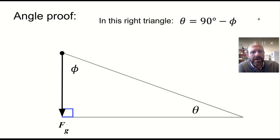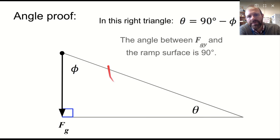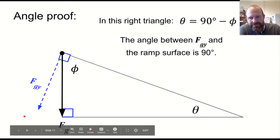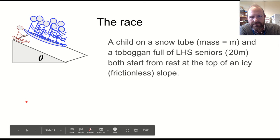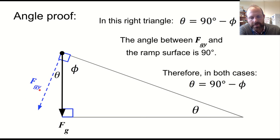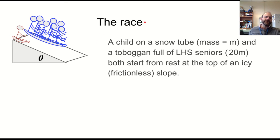So those two angles end up being the same. We can do a little bit of a proof of this using some geometry. We can say that the angle between FGY and the surface ramp is 90 degrees. That's FGY. That has to be theta, theta minus 90. You get the idea.